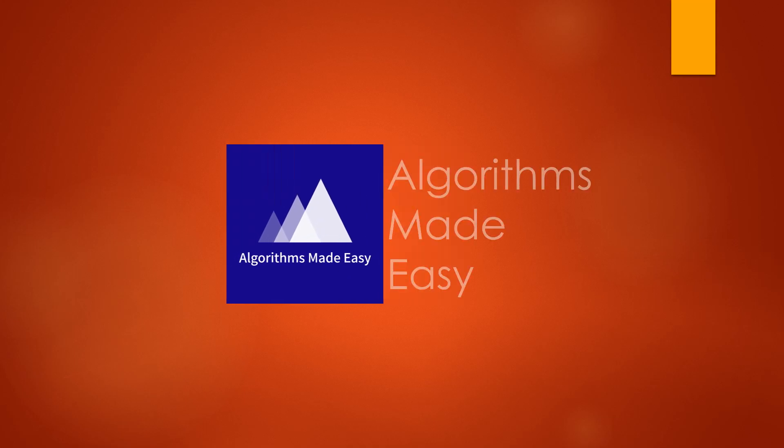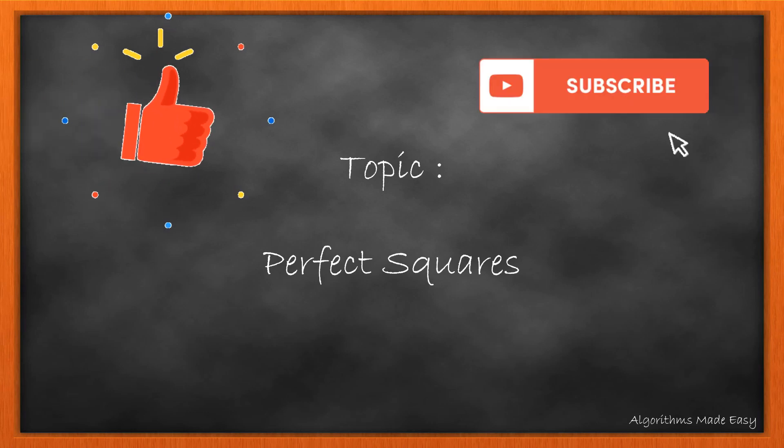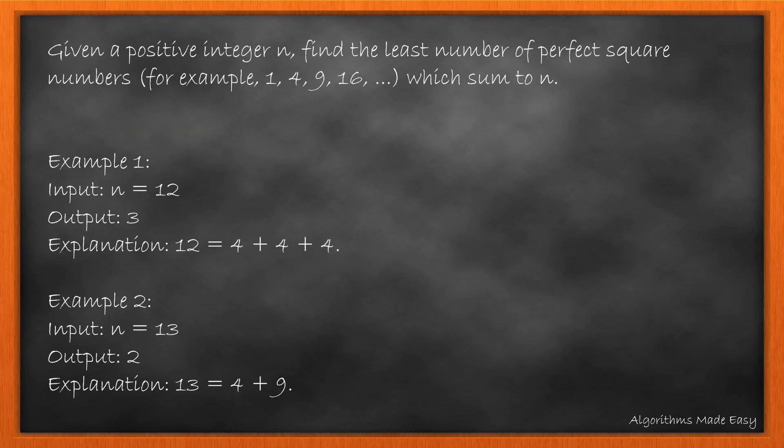Hello guys, welcome to Algorithms Made Easy. Today we will go through the day 27 problem from June LeetCode Challenge: Perfect Squares. Please like the video and if you are new don't forget to subscribe to our channel so that you never miss any update. Given a positive integer n, find the least number of perfect square numbers which sum to n.